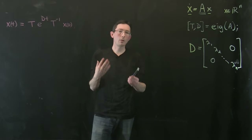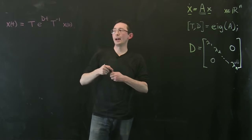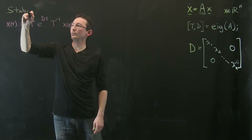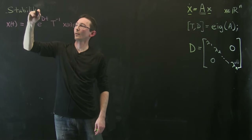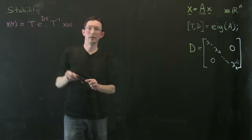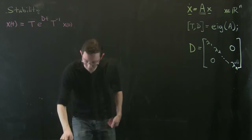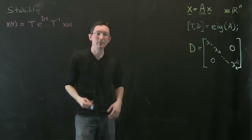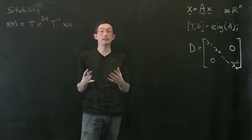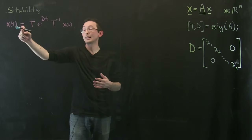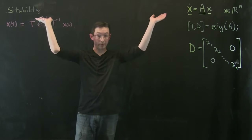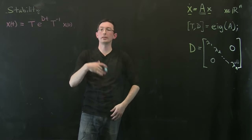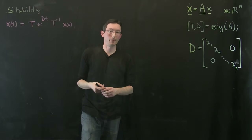What we're going to talk about now is stability. We're going to talk about what the system does as time goes to infinity. Does it blow up? Does it all go to zero? Does something weird happen?